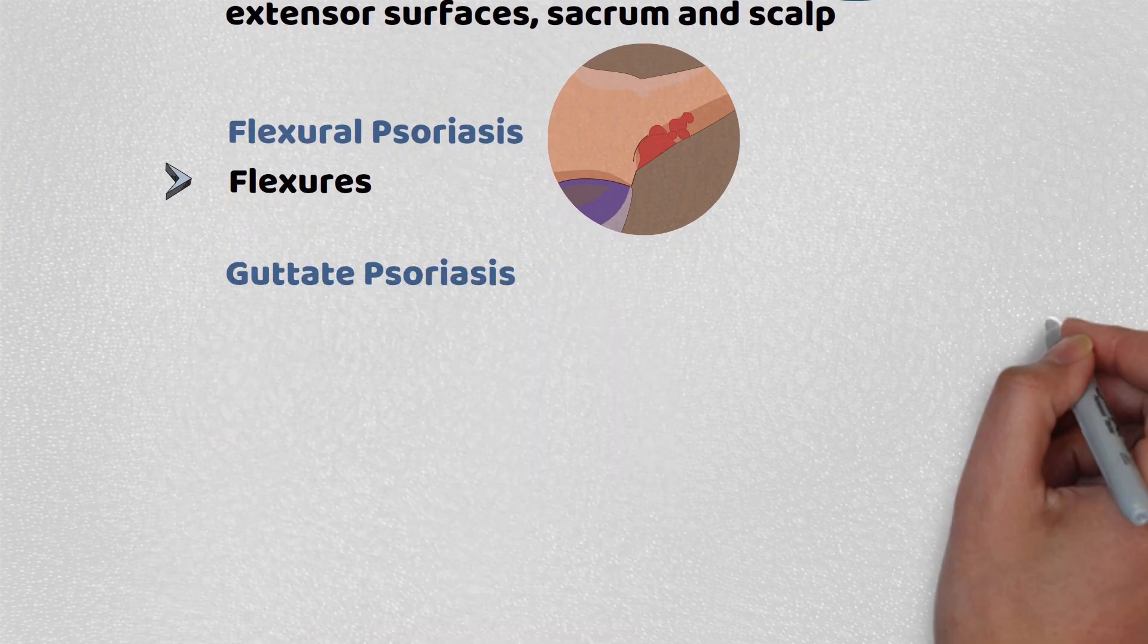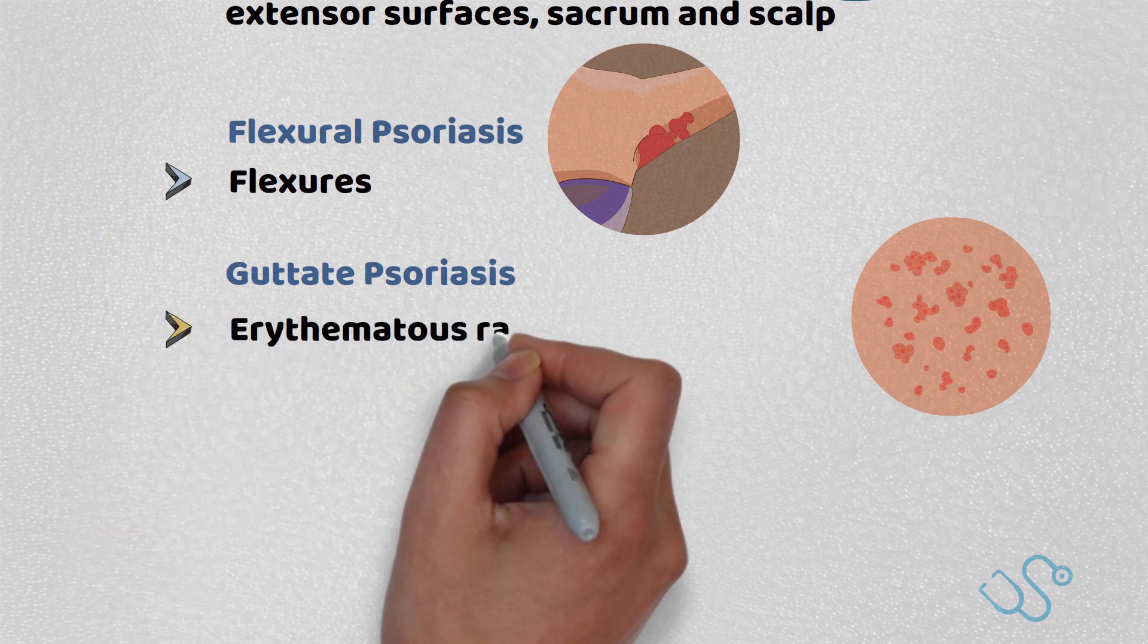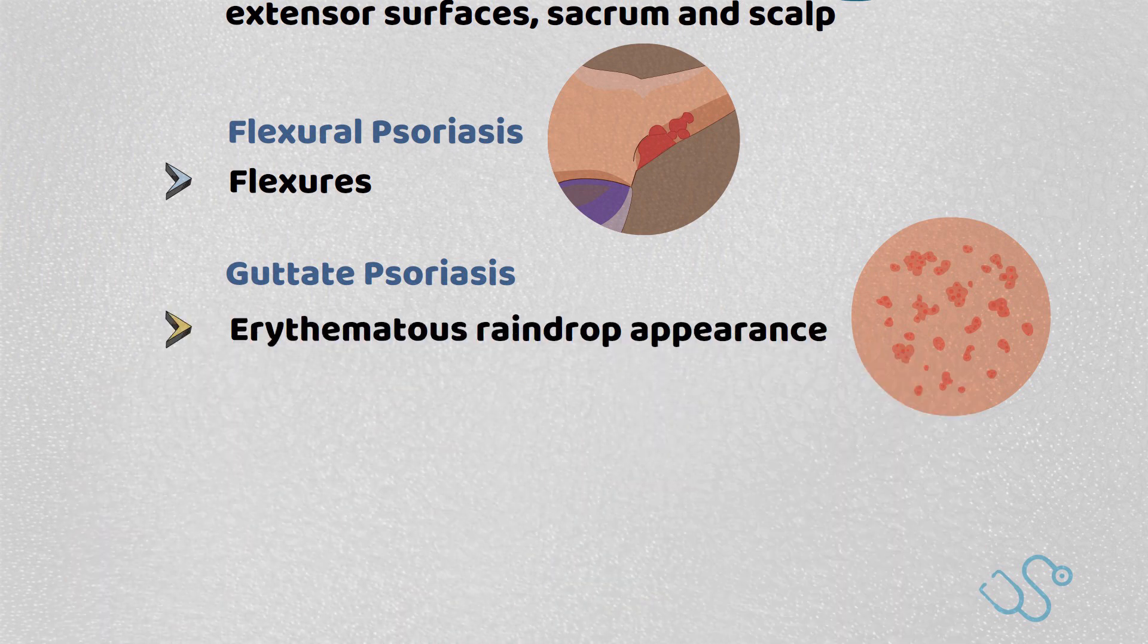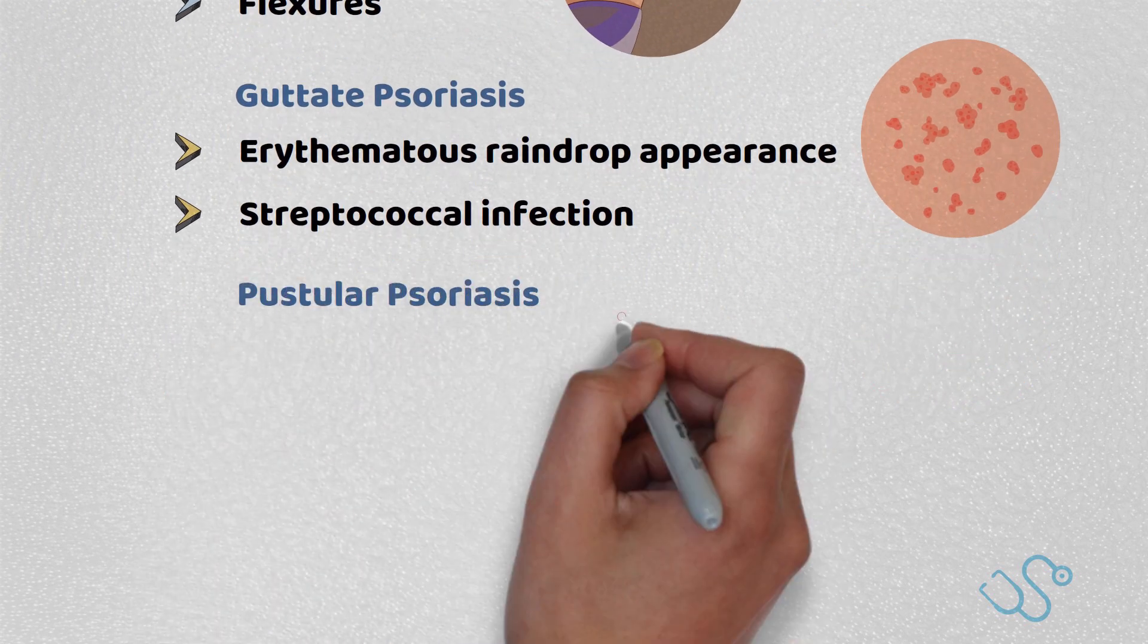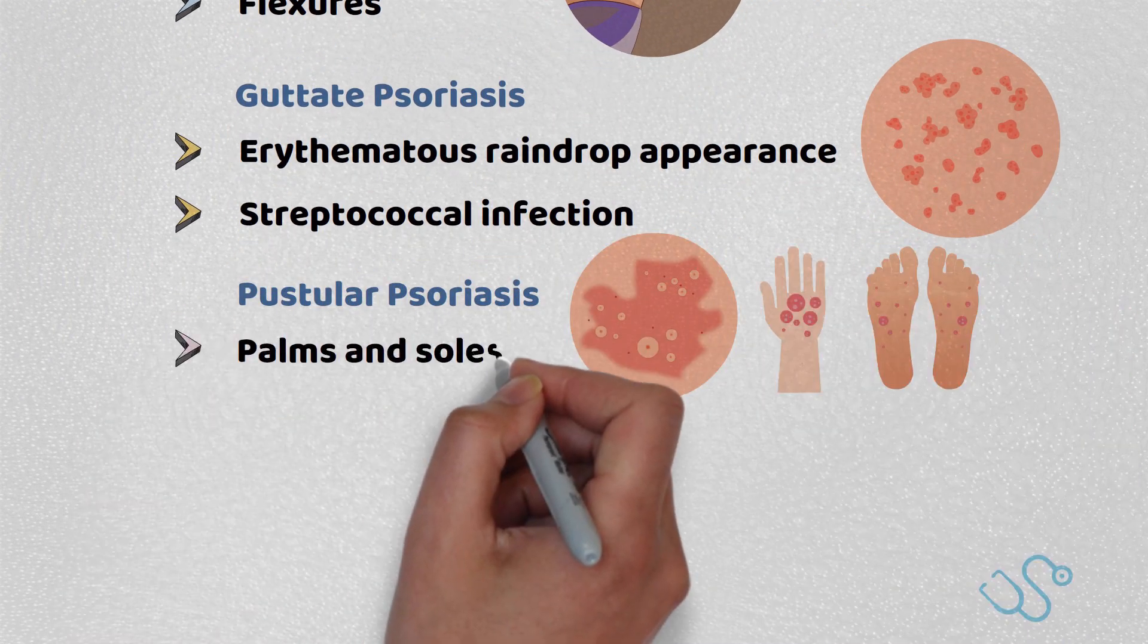Guttate psoriasis is a temporary rash, usually in erythematous fashion or a raindrop appearance, typically after a streptococcal infection. Pustular psoriasis affects the skin on the palms and soles.